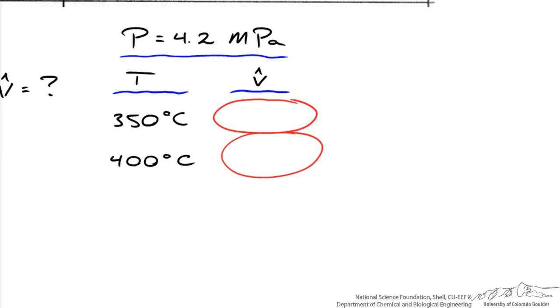I come up with a value of 0.06325 cubic meters per kilogram. So let's enter that value in the table that we're making. This is one out of the three interpolations that we need to do.